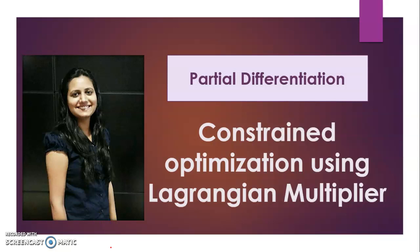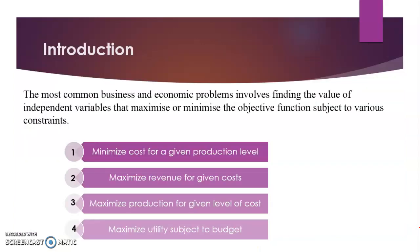Hi all, welcome back. Today's topic under partial differentiation is constraint optimization using Lagrange multipliers. The most common business and economic problems involve finding the values of independent variables that maximize or minimize the objective function subject to various constraints. These constraints could be production level, cost, or budget.